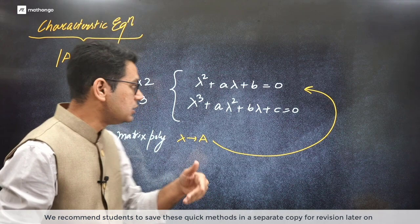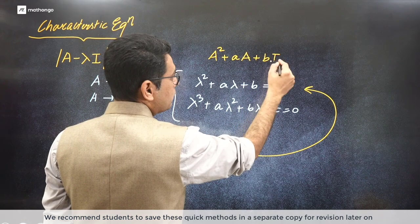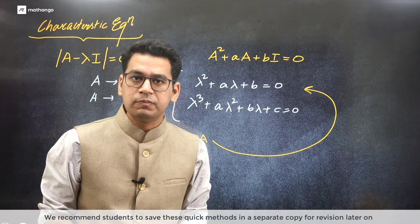So if we convert this to matrix polynomial, what will it become? A square plus A times A plus B. But B cannot be left alone because these are matrices, so how do you have to multiply here? With the identity matrix. So this is the basic meaning of when I say replace lambda by A. This is the basic characteristic equation, also called Cayley-Hamilton theorem, which we use to find inverse.